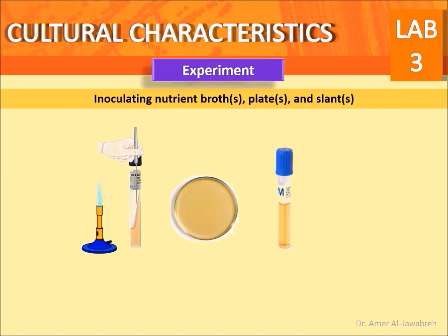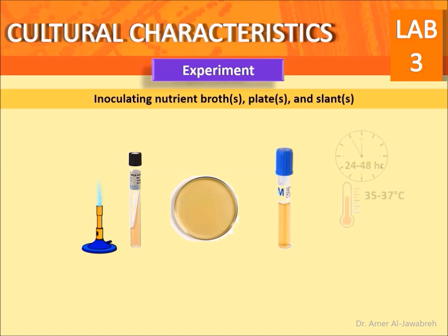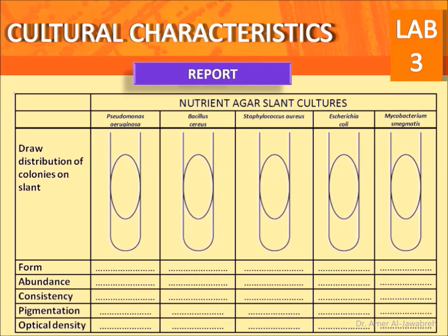Streak plates with a sterile loop to produce isolated colonies. Inoculate broths using a sterile loop for each organism, shaking the loop a few times to dislodge the inoculum. Incubate all cultures at 37 degrees Celsius for 24 to 48 hours.